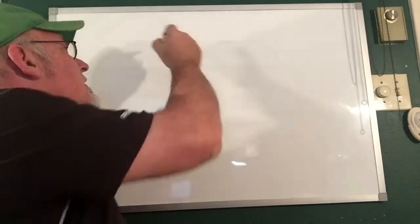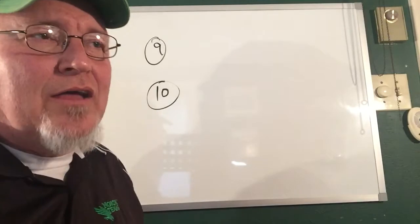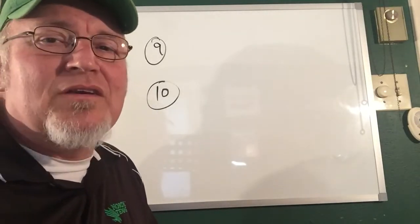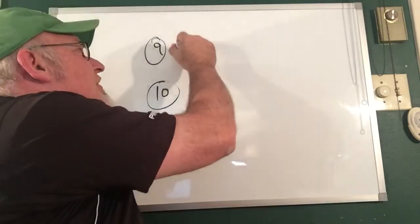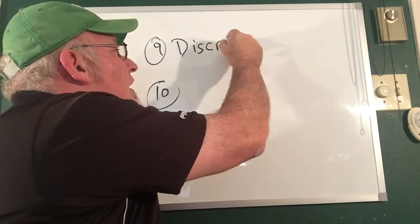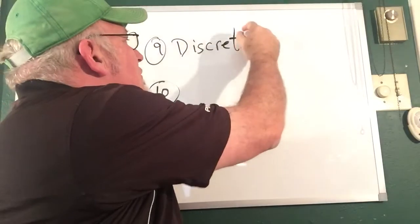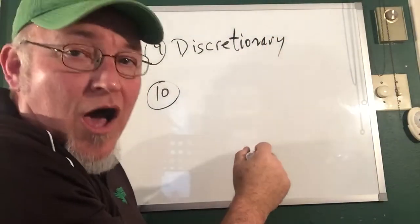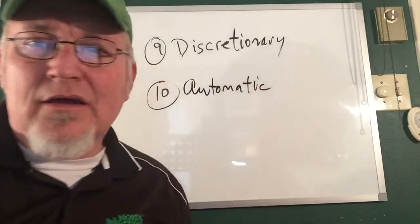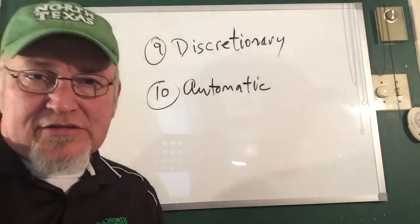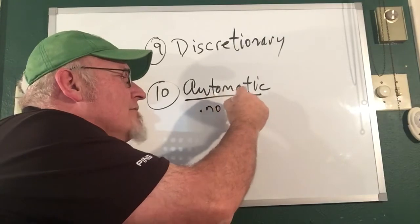So nine and ten, I want to talk about the difference between, I alluded to this before, but I want to talk about the difference in Congress when we talk about spending. So the difference between discretionary spending versus automatic spending. And the short answer is automatic spending is spending that does not take a vote by Congress. It's automatic.